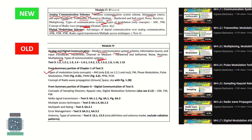The types of modulation - AM, FM - and the concept of radio wave propagation are again the same in both syllabi. Then in the new syllabus, digital modulation schemes are added: ASK, FSK, and PSK are covered. Radio signal transmission and multiple access techniques are also included.